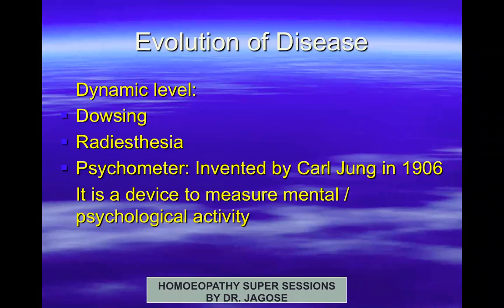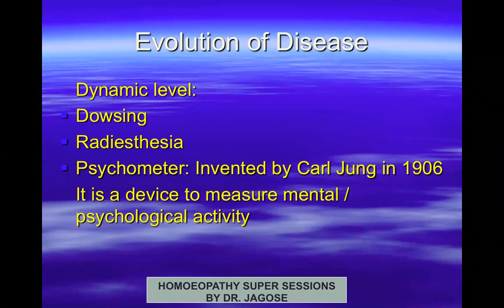Hello friends, today we will see the second part of general pathology of homeopathy. Here we will see what is the evolution of the disease. We all know that the disease is on a dynamic level and it is never a materialistic aspect. The old school looks at the disease at the materialistic level, whereas the homeopathy school looks at the disease at the dynamic level.